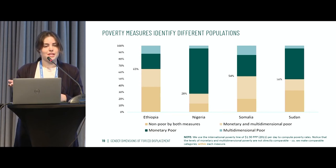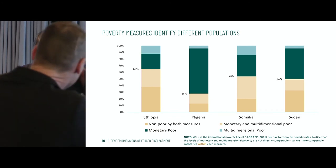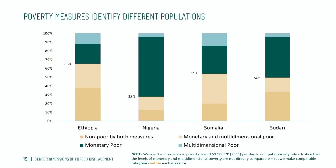Here are some of the differences between the poverty measures — income poverty versus multidimensional poverty. Each bar represents the whole population of each country. The bottom yellow-beige portion is the share covered by both measures, while the top blue-green portion shows the difference. In Somalia, it's about 50% where the measures cover the same population, whereas in the northeastern Nigeria sample, it's about 28%. So these really are two different measures showing us different things.